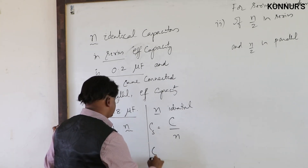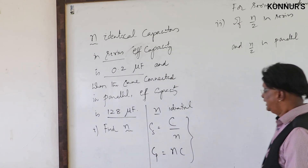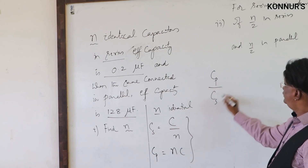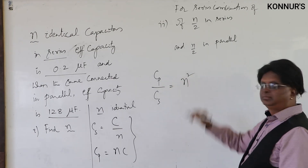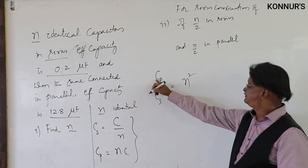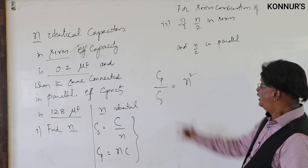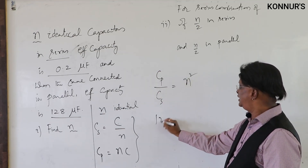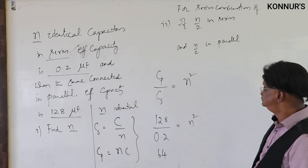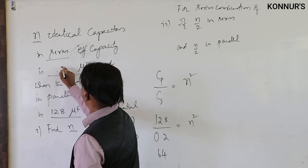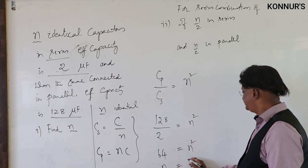Taking the ratio C_parallel / C_series = (nC) / (C/n) = n². According to the data: 128 / 0.2 = n². Adjusting numbers: if C_parallel = 128 and C_series = 2 microfarad, then n² = 64, giving n = 8.